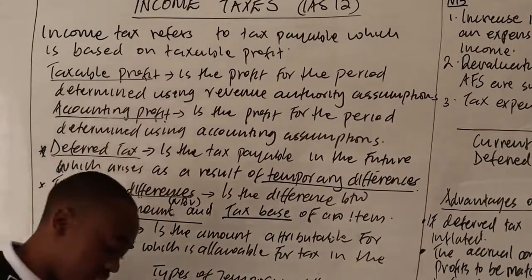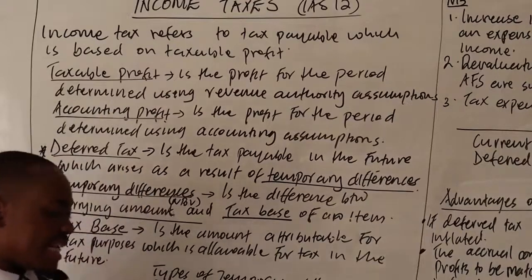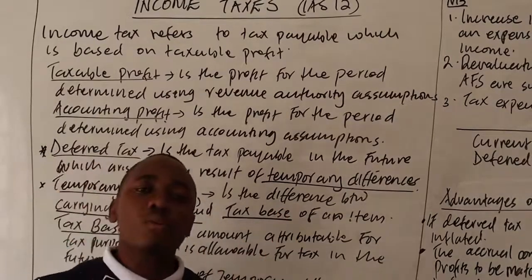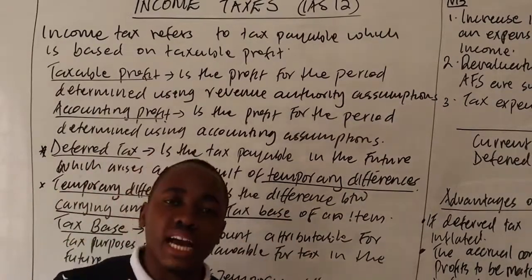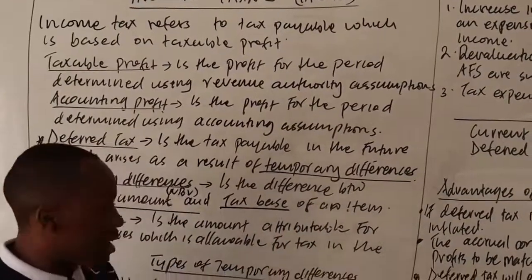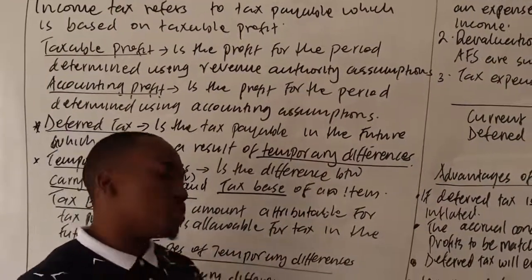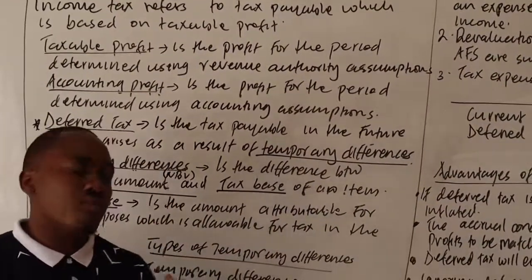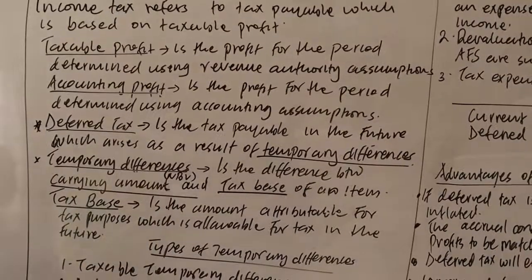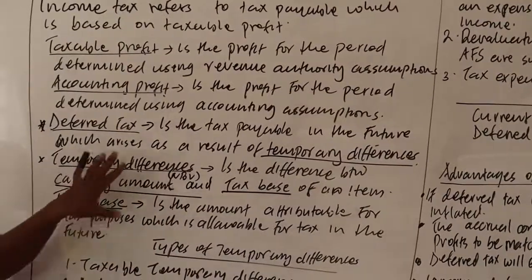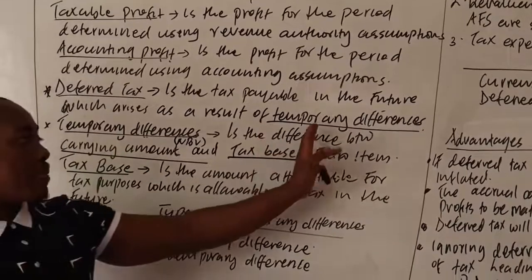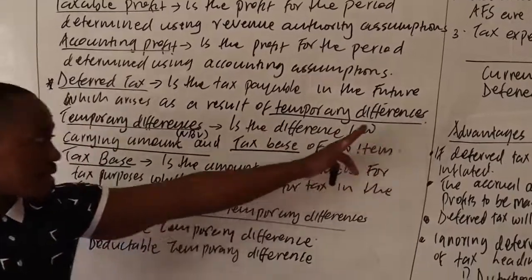Get this definition clearly: tax base is the amount allowable for tax in the future. Just remember that — tax base is the amount which will be allowable for tax in the future. And we have said that deferred tax will arise as a result of temporary differences.